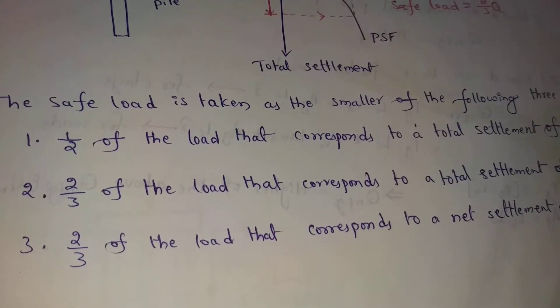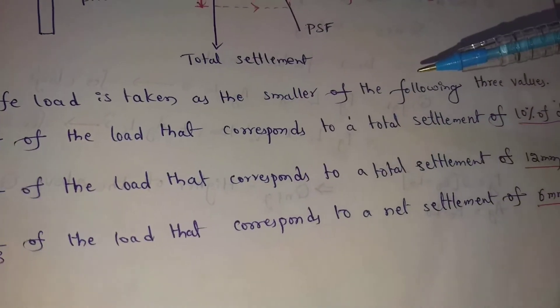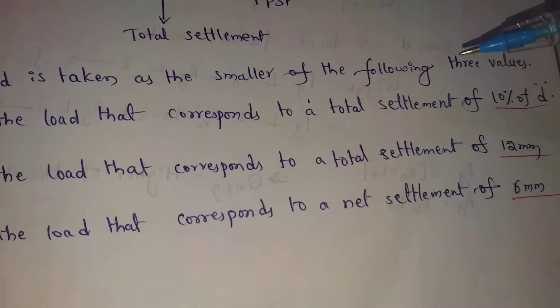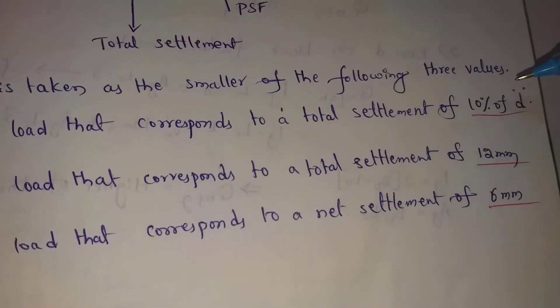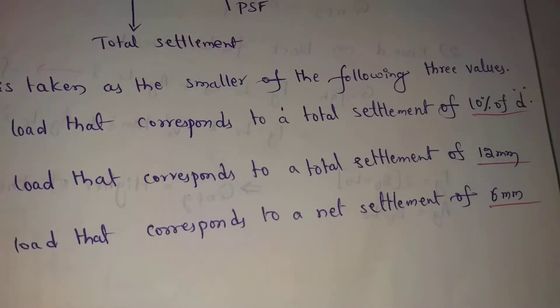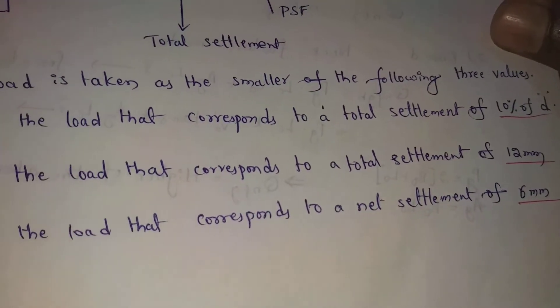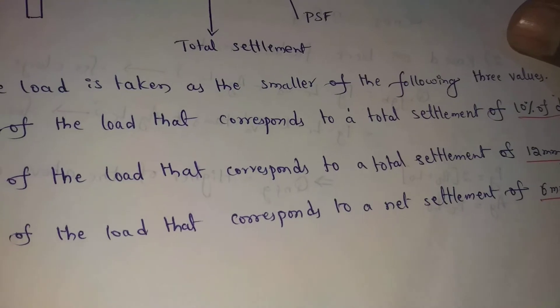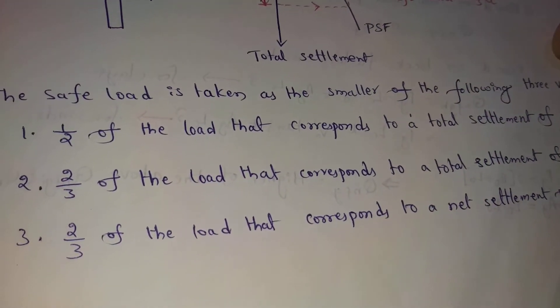First: half of the load corresponding to a total settlement of 10% of the pile diameter. We choose half of that load.